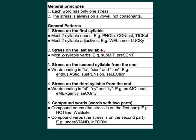Point 2: Stress on the last syllable. This applies to most two-syllable verbs, for example: submit, present. Point 3: Stress on the second syllable from the end. This applies to words ending in -ic, -sion, -tion. For example: enthusiastic, suspension, selection.